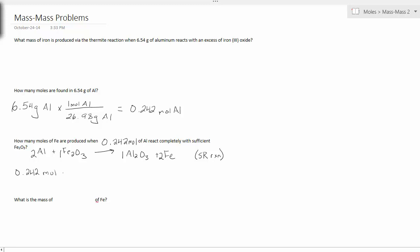0.242 moles of aluminum. I'm going to look to convert this to moles of iron. So from the balanced equation, I see there's two moles of iron, there's two moles of aluminum. So what this turns out is 0.242 moles of iron.